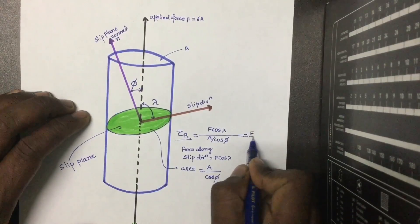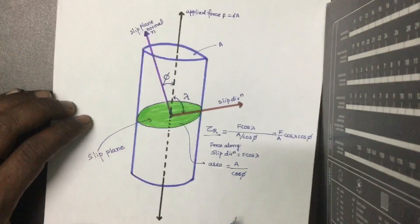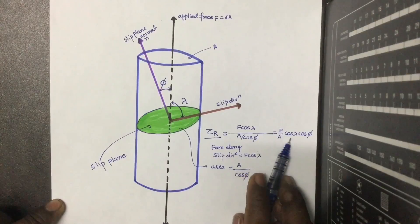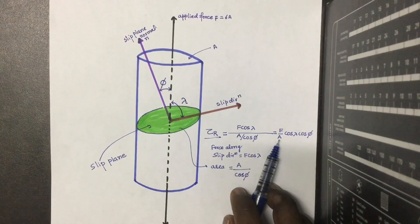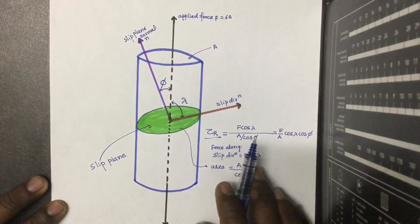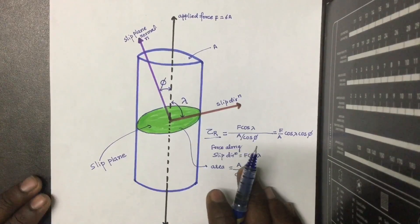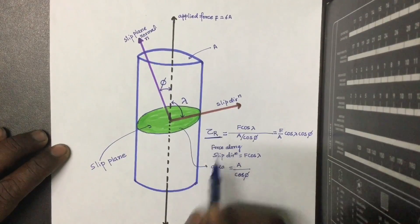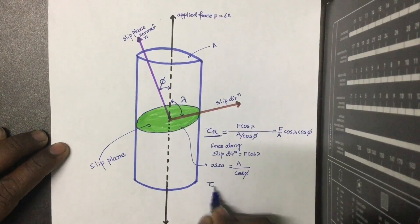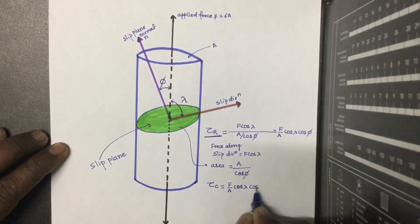This gives us τ_r = (F/A)·cos(λ)·cos(φ). This is the expression for resolved shear stress. The value of resolved shear stress at which slip occurs in a material with a specified dislocation density and purity is constant, and it is called the critical resolved shear stress, denoted τ_c.